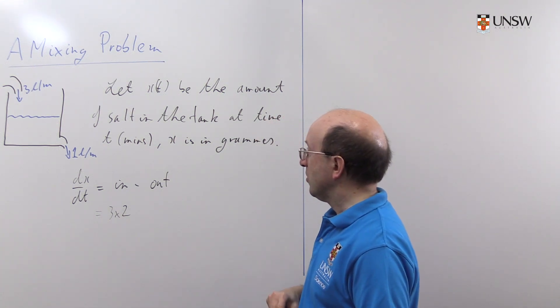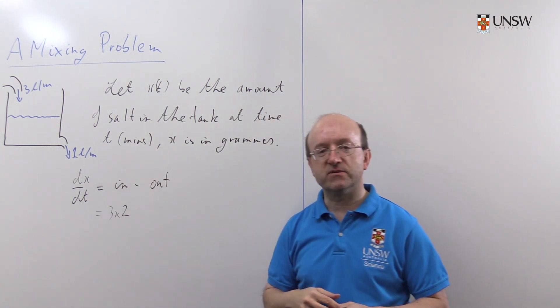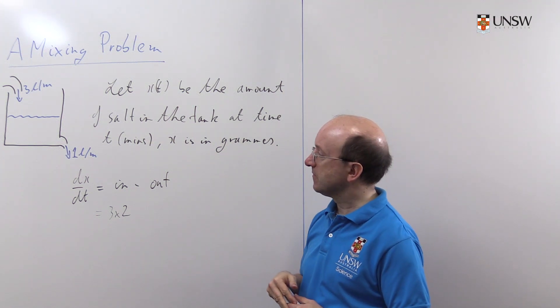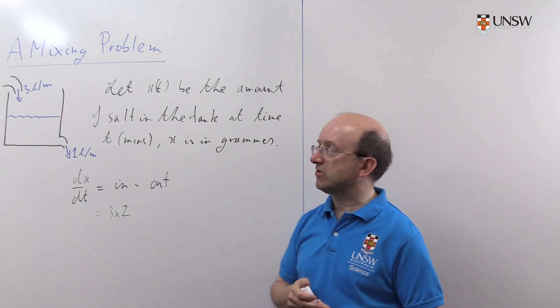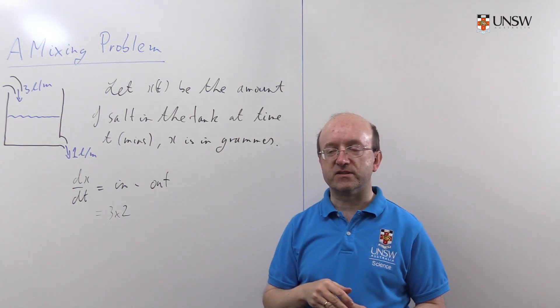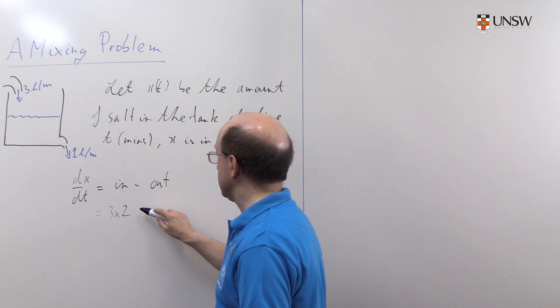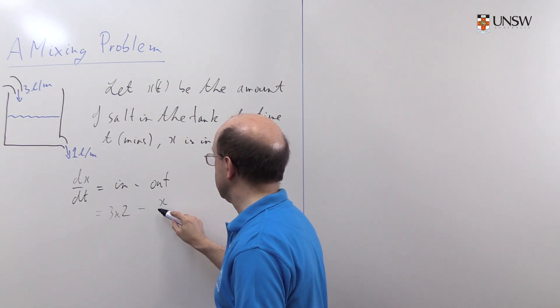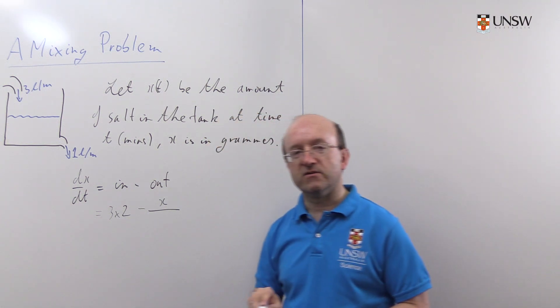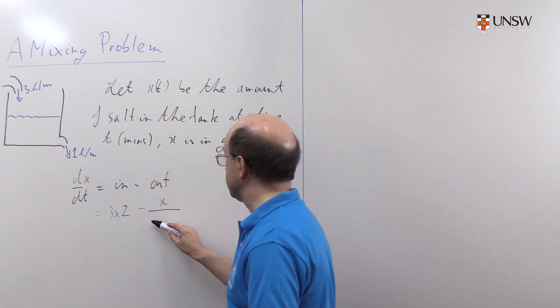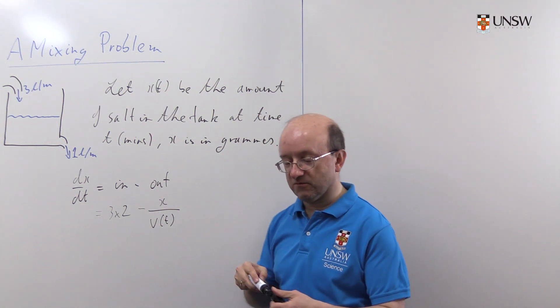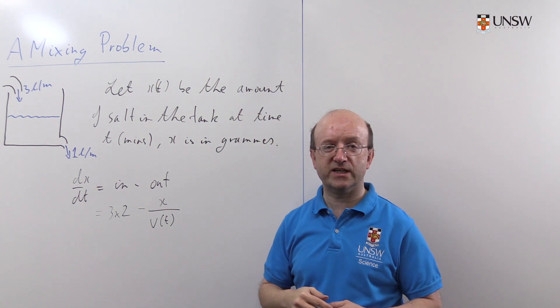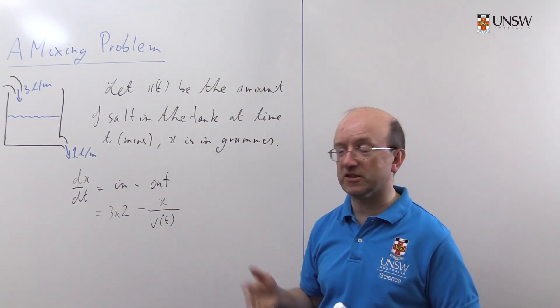And then, what's going out? Well, what's going out is 1 litre a minute. So what we need to know is the concentration of salt inside the tank. Well, the concentration of salt is however much salt there is divided by the volume of liquid in there. We'll work out, because the volume of liquid here is changing, it's not constant as it is in some problems.